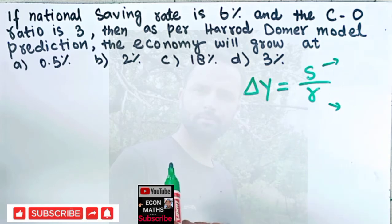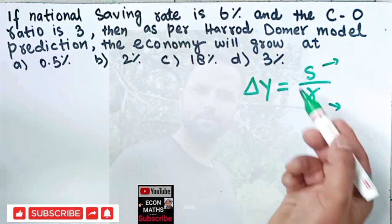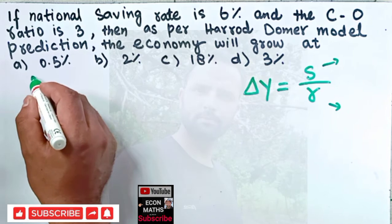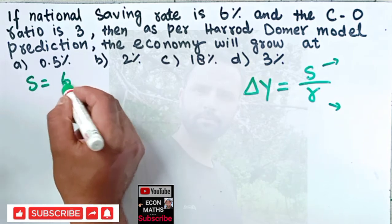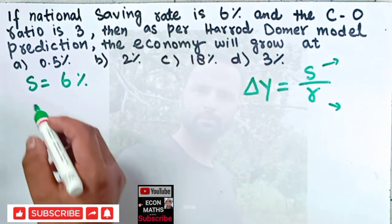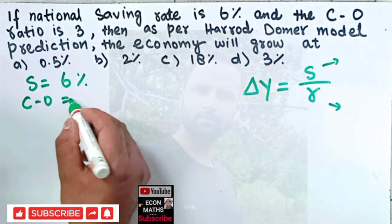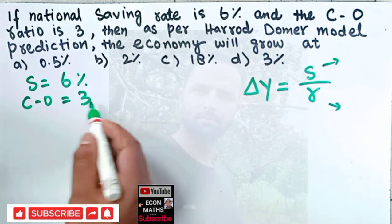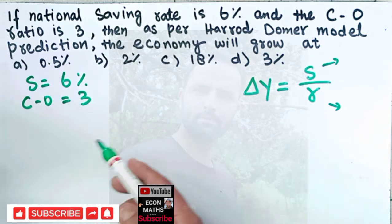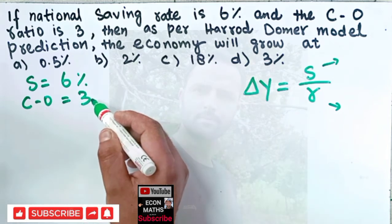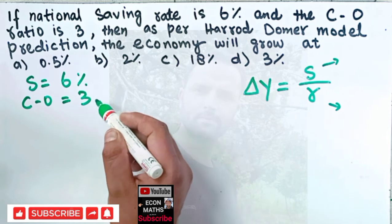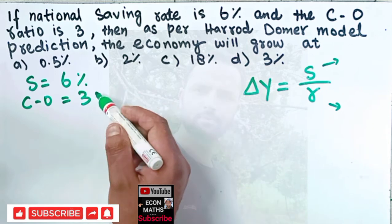We are given S equals 6%, the national saving rate is 6%, and our capital output ratio is given as 3. This capital output ratio of 3 means to produce one unit of output we need three units of capital.